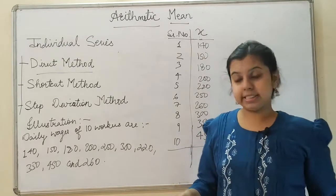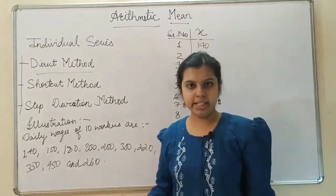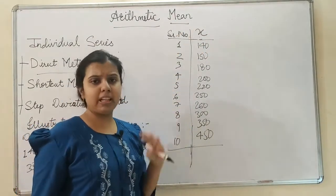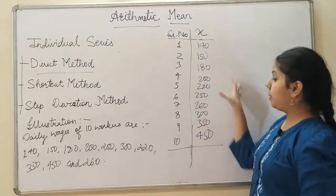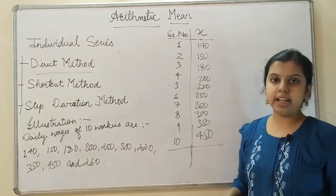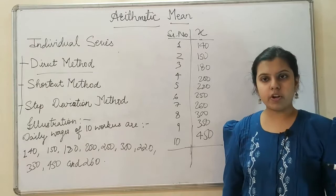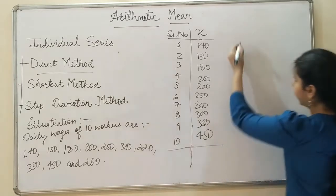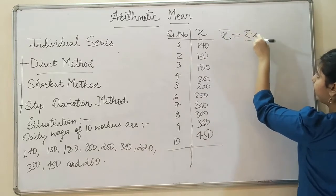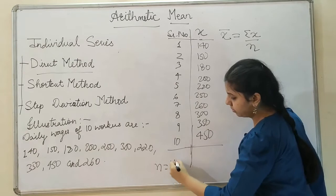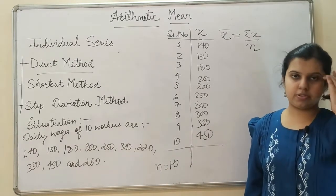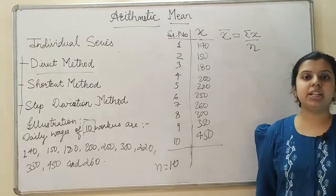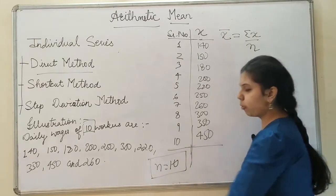So what I have done is taken the question values and made a table in which those values are my X. I have arranged the data in ascending order — this is just for a convenient application of the formula. The formula is: mean is denoted by x-bar, so x-bar equals sigma X divided by n. My n equals 10, which is the total number of observations, because I have the daily wages of 10 workers.